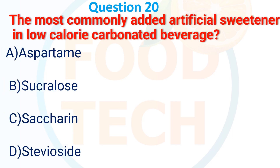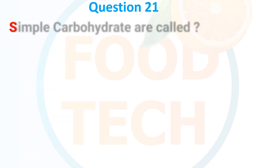Question 20: The most commonly used artificial sweetener in low-calorie carbonated beverages — A. Aspartame, B. Sucralose, C. Saccharine, D. Stabilizer. The answer is A. Aspartame.